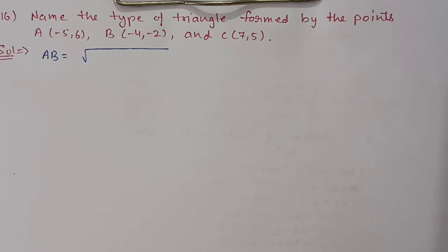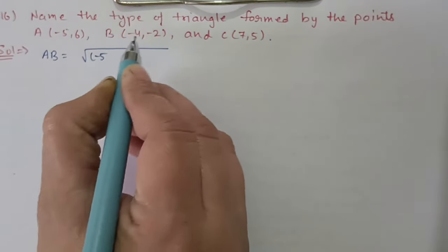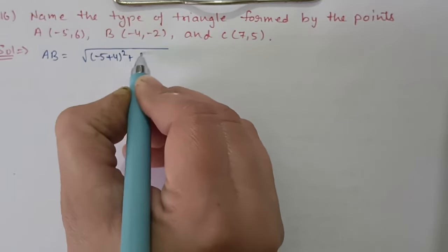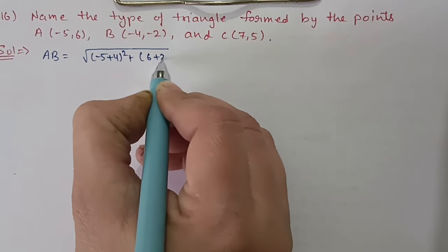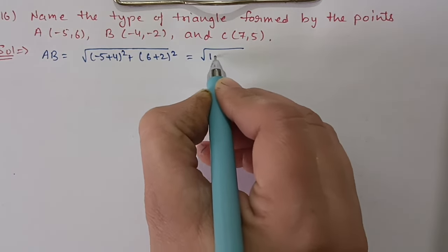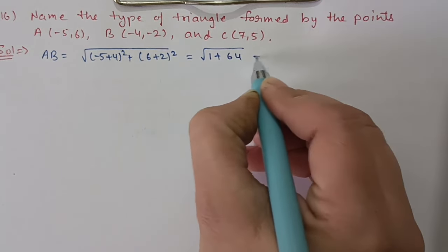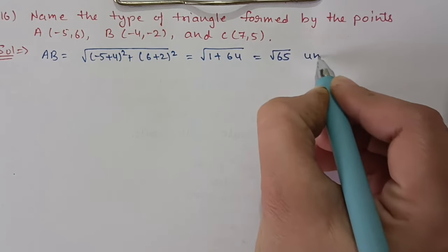Question number 16: Name the type of triangle formed by the points A(−5, 6), B(−4, −2) and C(7, 5). We will find the lengths of all three sides and then determine the type of triangle. First, AB = √((−5−(−4))² + (6−(−2))²) = √(1+64) = √65.